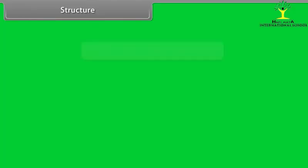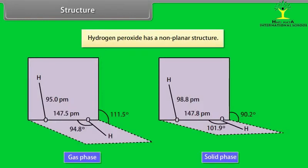Structure: Hydrogen peroxide has a non-planar structure. In gas phase, dihedral angle is 111.5 degrees. In solid phase, at 110 Kelvin, dihedral angle is 90.2 degrees.